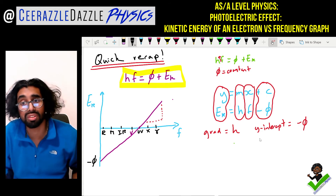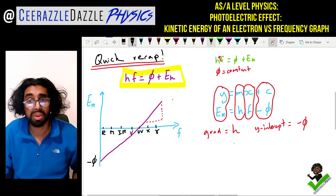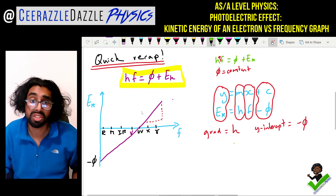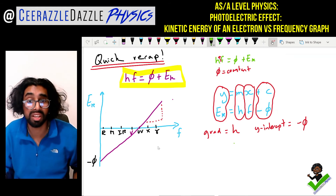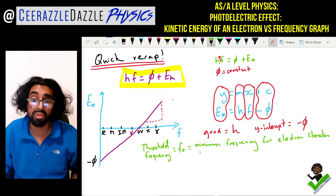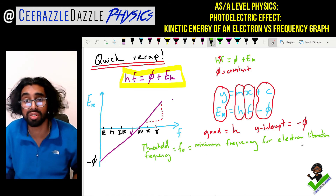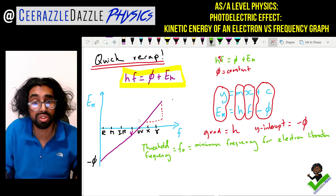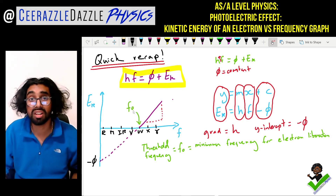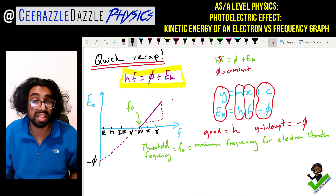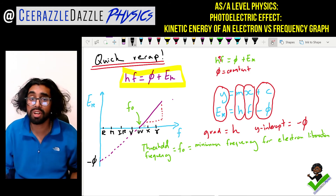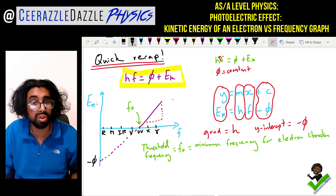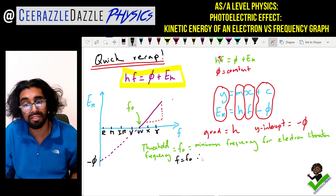There's one more thing to talk about: the threshold frequency. The threshold frequency is the minimum frequency for electron liberation, and we denote that as f-naught. It can be found on the graph as the point where the electrons start to be liberated. At the threshold frequency, the kinetic energy is going to be zero — so when the frequency equals f-naught, the kinetic energy of the electrons released equals zero.